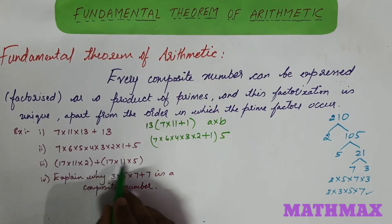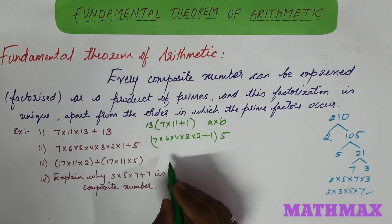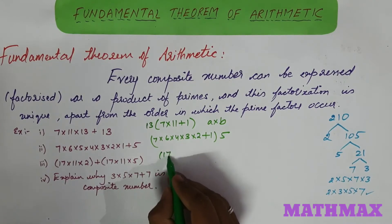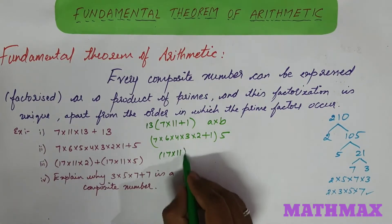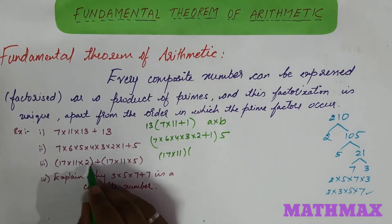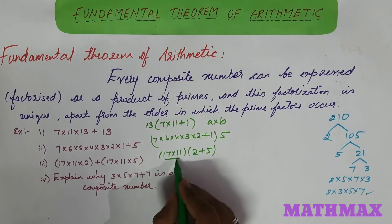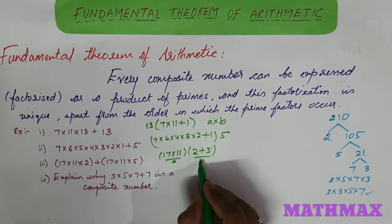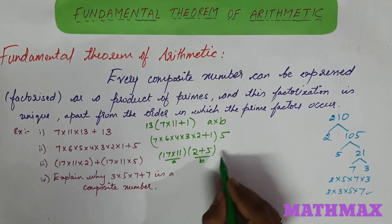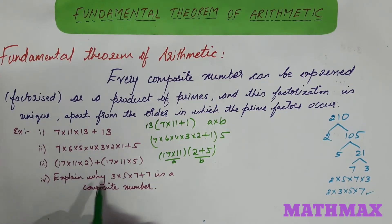For the question 17 into 11 into 2 plus 17 into 11 into 5, if we consider this as one number and the other as a separate number, this is of the form A plus B. We need to change it to a product, so we can write 17 into 11 into (2 plus 5). This gives us A into B, so it is a composite number.